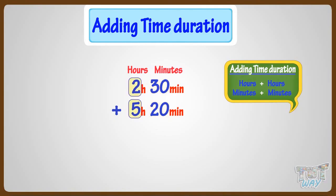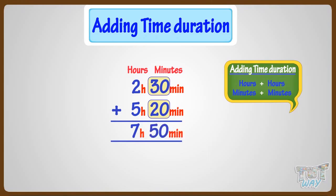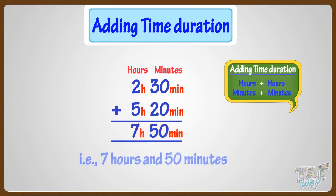By adding hours, we get 7 hours, and by adding minutes, we get 50 minutes. So adding 2 hours 30 minutes to 5 hours 20 minutes, we get 7 hours and 50 minutes.